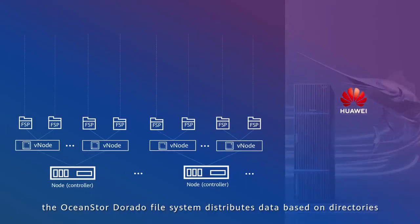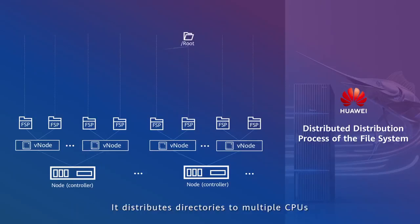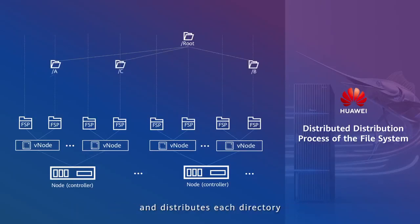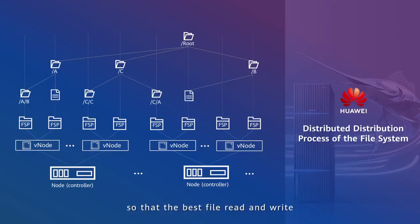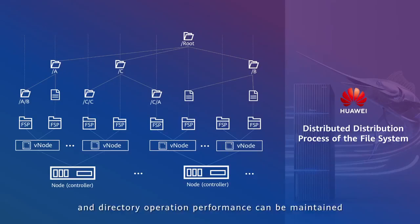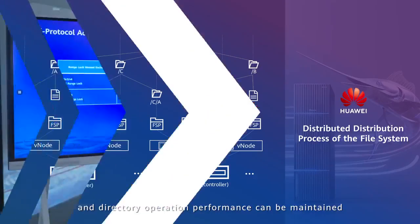To address this, OceanStore Dorado file system distributes data based on directories. It distributes directories to multiple CPUs and distributes each directory and its subfiles to the same CPU, so that the best file read and write and directory operation performance is maintained.